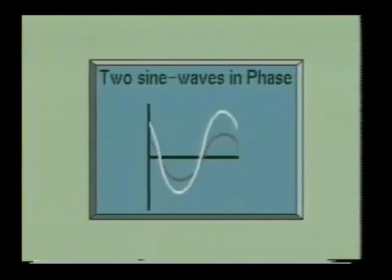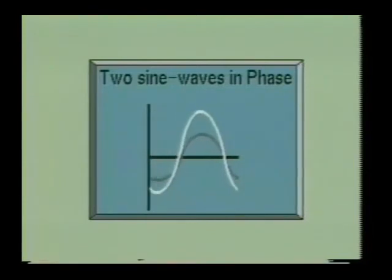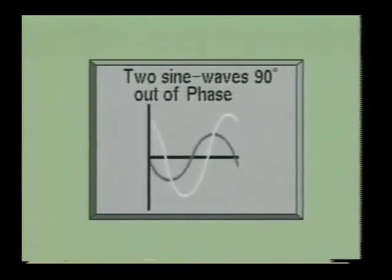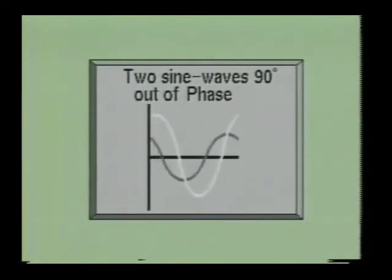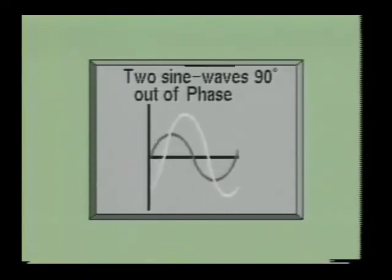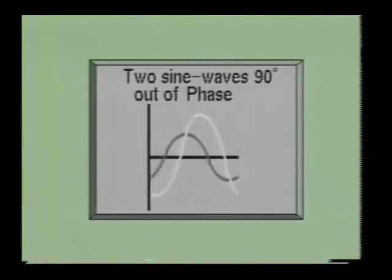Here we see two sine waves which are 90 degrees out of phase. Notice that one sine wave has reached its peak value as the other sine wave is just crossing its zero voltage point. When we look at the waveform, we see that one sine wave started 90 degrees before the other sine wave. We could say that one sine wave is leading the other sine wave by 90 degrees, or we could state that one sine wave is lagging the other sine wave by 90 degrees. Either would be a correct statement.